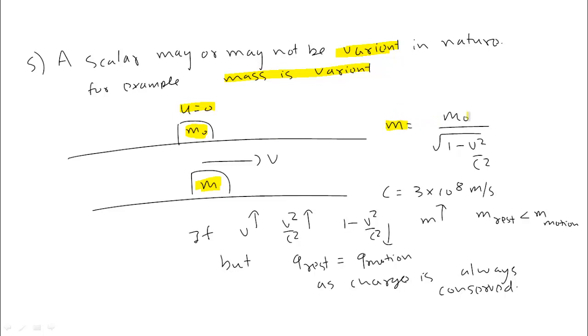m₀ is rest mass. m = m₀/√(1 - v²/c²), where v is speed of body and c is speed of light (3×10⁸ m/s). If velocity increases, v²/c² increases, 1 - v²/c² decreases, so m increases. Mass increases as denominator decreases.